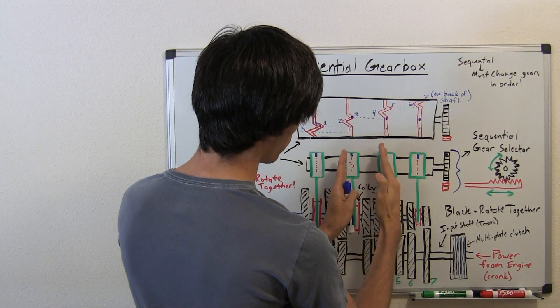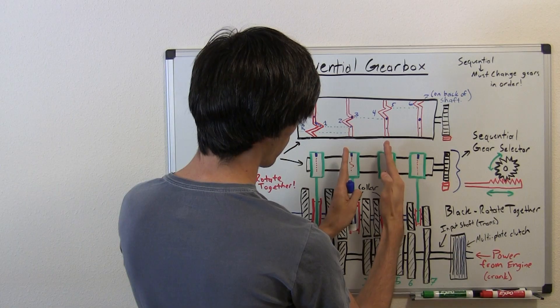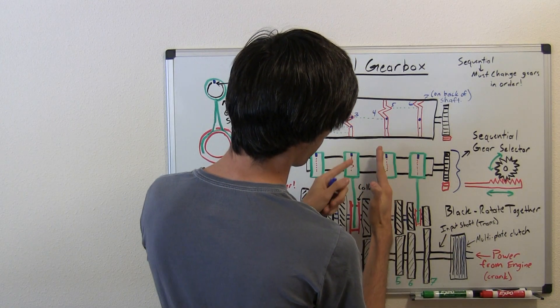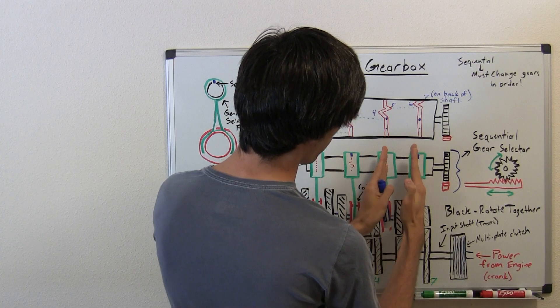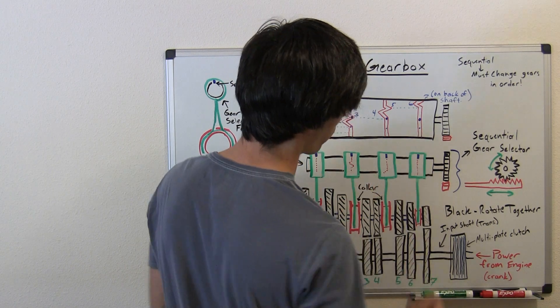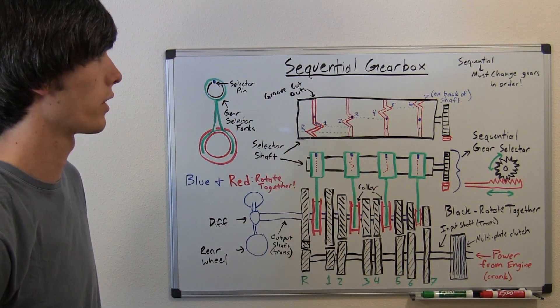Then you'll get to here, you'll rotate that once more, it'll push it into fifth. Then for sixth, this will come out of fifth, this will go into sixth. And then for seventh, it'll push it into seventh. So that's how you'll go through all the gears.